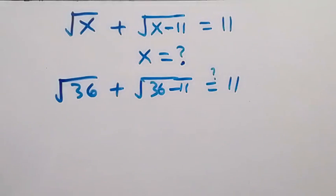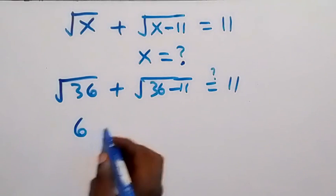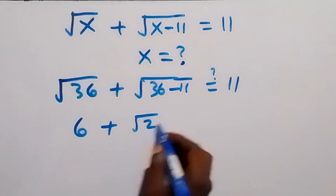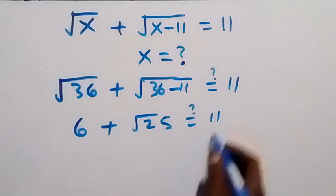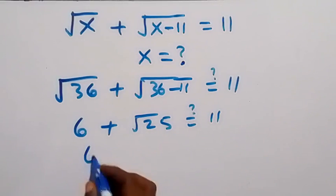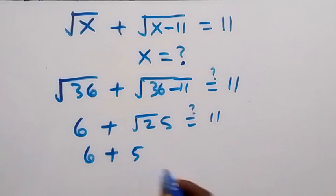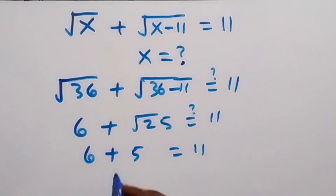√(36 − 11) is √25. So we have √36 plus √25, that is 6 plus 5. Is 6 + 5 equal to 11?